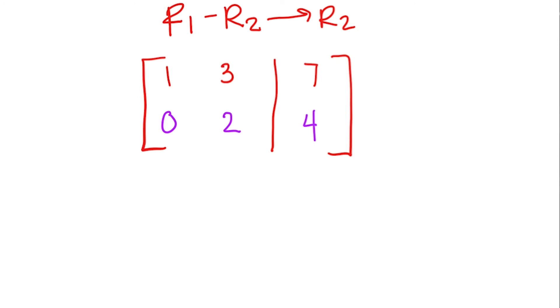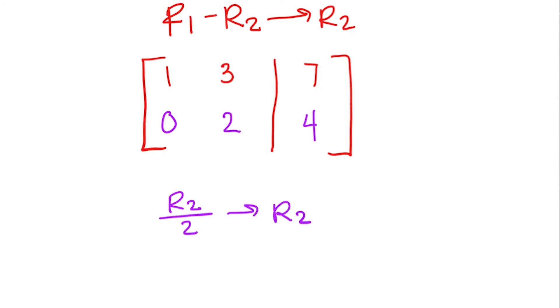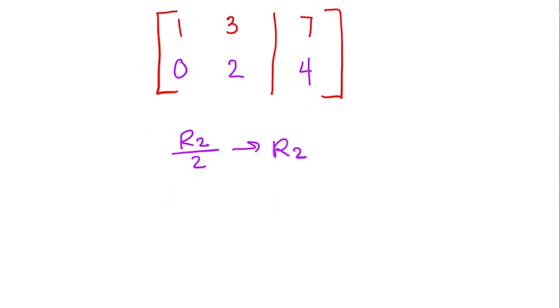So I'm going to do row 2 divided by 2 to change that second row. So row 1 is still 1, 3, 7, and now the second row we have 0. 2 divided by 2 is 1. 4 divided by 2 is 2.